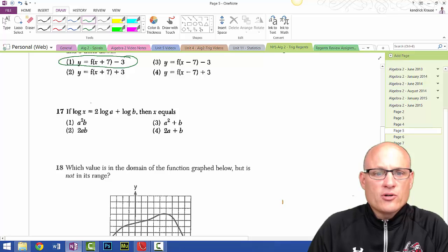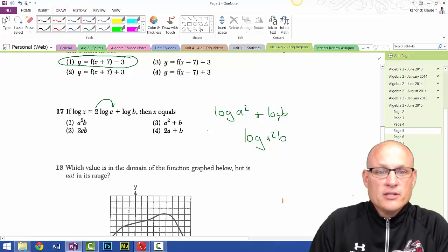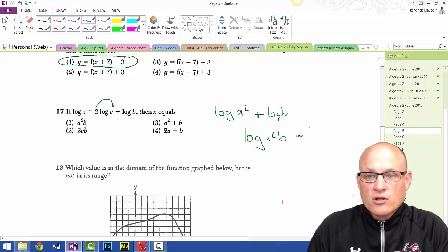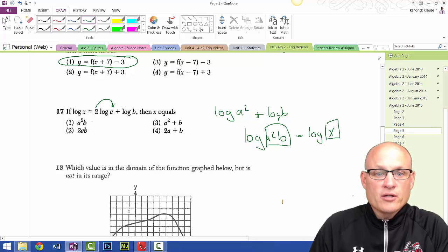Question 17: Log of x equals this, so return this. You get log of a squared plus log of b. Addition came from multiplication, so this is log of a squared times b. That means log of x equals log of a squared b.